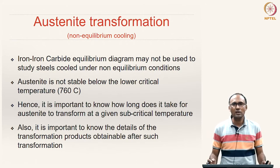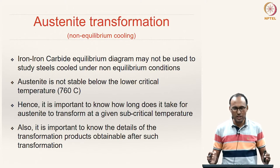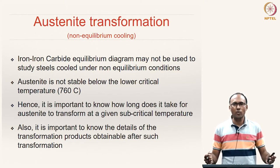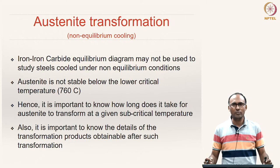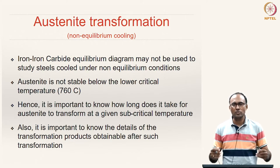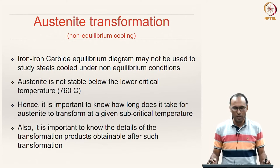In this class we will focus our attention on a specific material system called steel and we will discuss how the solid state transformation from austenite to the room temperature phases — ferrite and cementite — for plain carbon steels takes place. Specifically, the austenite to pearlite transformation is what we are going to look at.